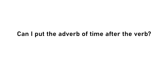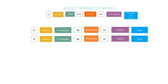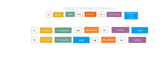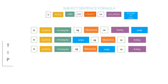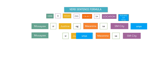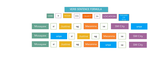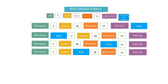Now back to our lesson. Yes, you may put the adverb of time after the verb. In the subject sentence formula, you can put the adverb of time after the location, after the verb, or after the object. But do not put the adverb of time directly after the name of the person or after the noun, because it will sound wrong. In the verb sentence formula, you may put the adverb of time after the verb, after the object, after the name of the person, or after the location.